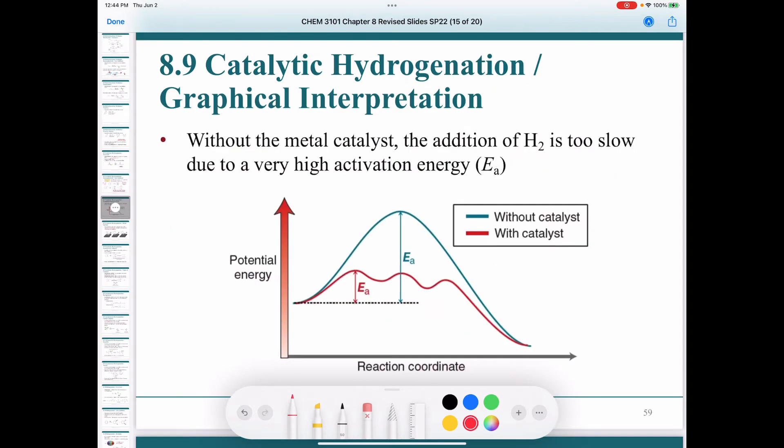Now if you're wondering why do we need this metal catalyst? Why do we need to add palladium, platinum, or nickel to the reaction mixture? Well, it's because that if we don't have the metal catalyst, the activation energy for hydrogenation is too high, and therefore the addition of hydrogen across the double bond is too slow. So you can see here, the activation energy without the catalyst is very high. However, when we add our catalyst...